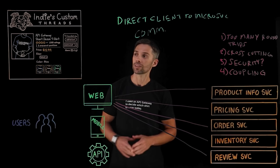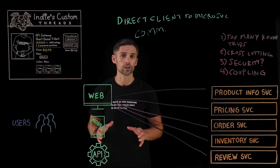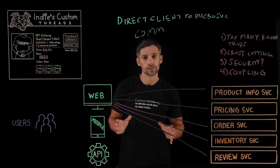Now let's take a deeper look into how an API Gateway can both improve the user and developer experience for an online store. Let's say we have a fictitious e-commerce storefront, Indies Custom Threads. In this store, you can order customized t-shirts, kind of like this nifty API Gateway t-shirt.